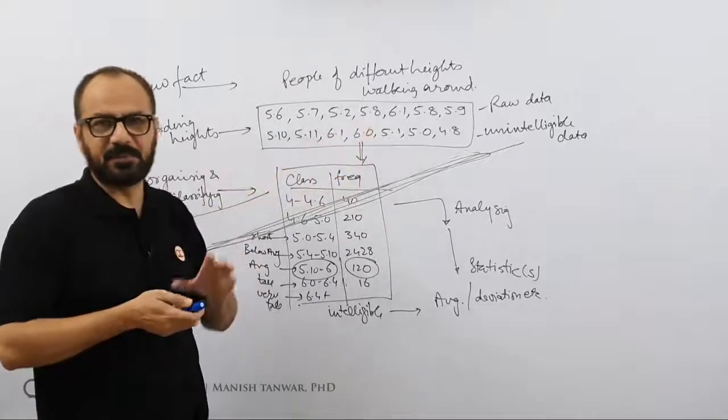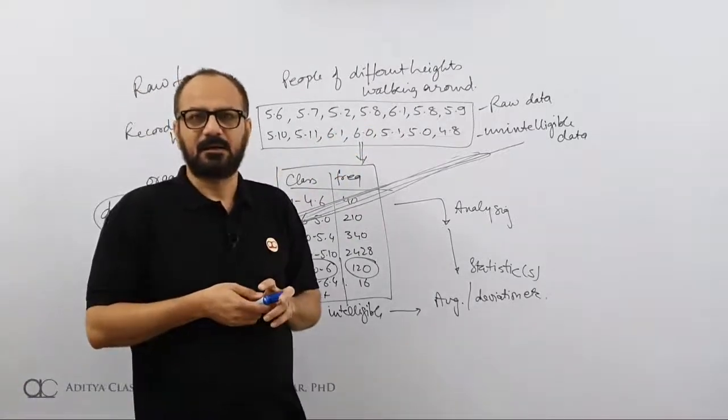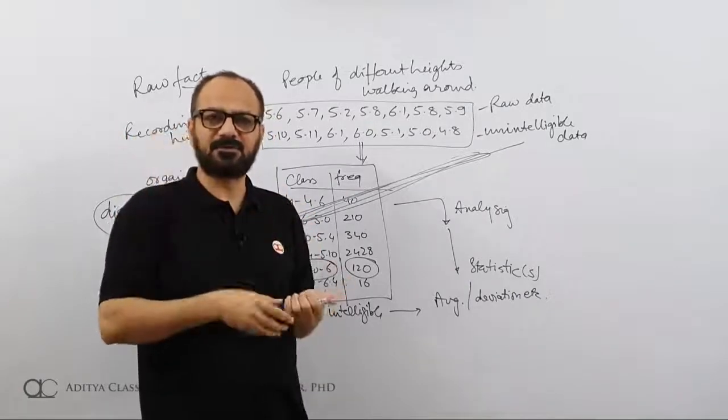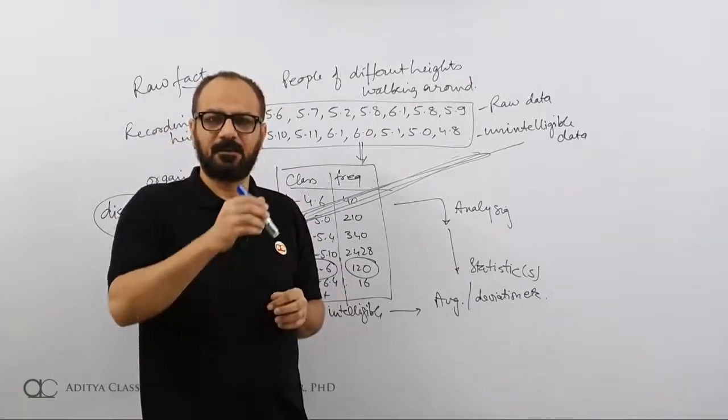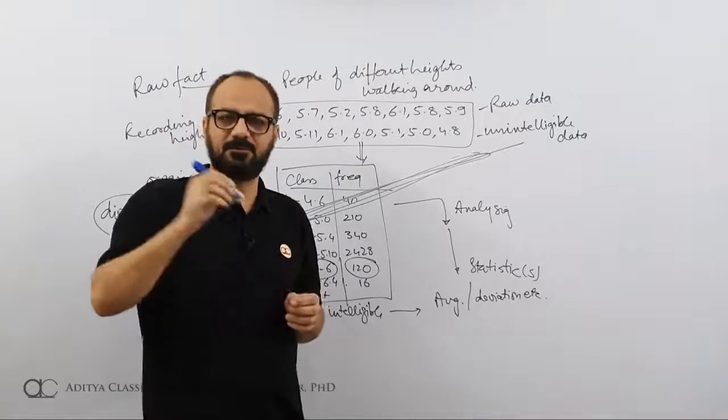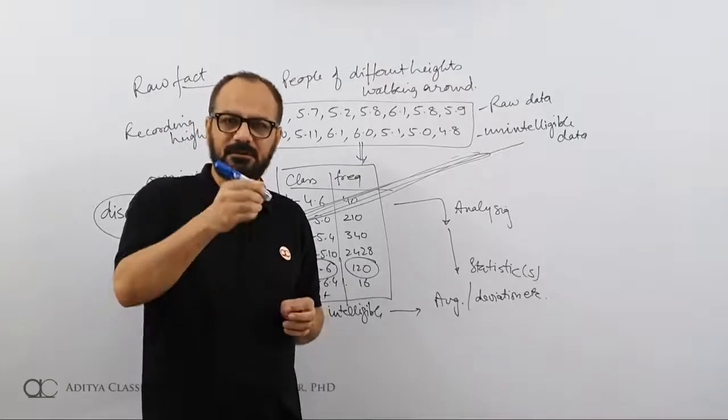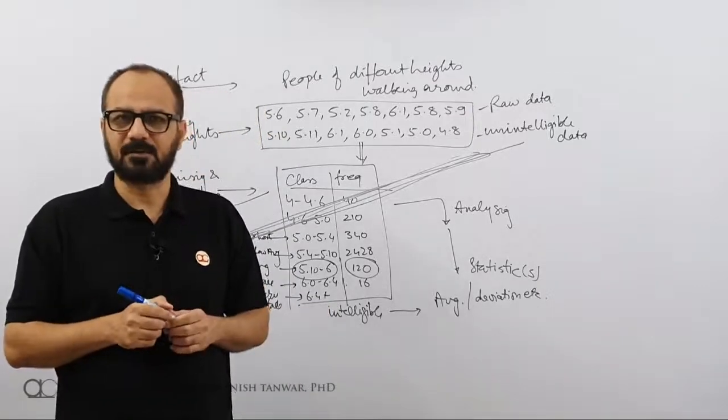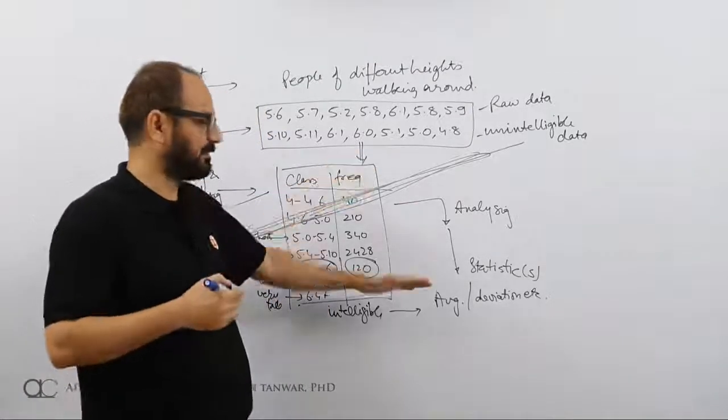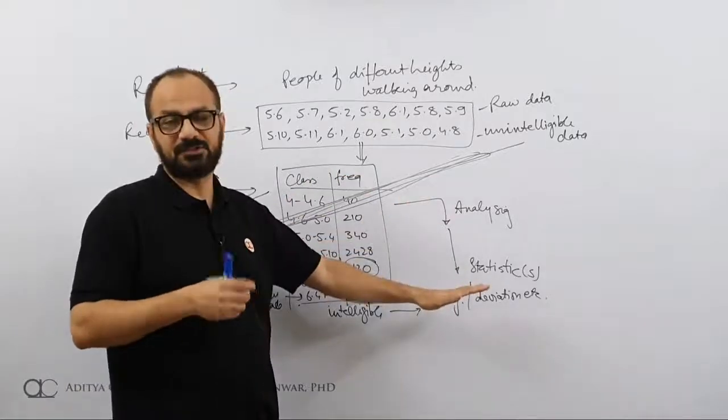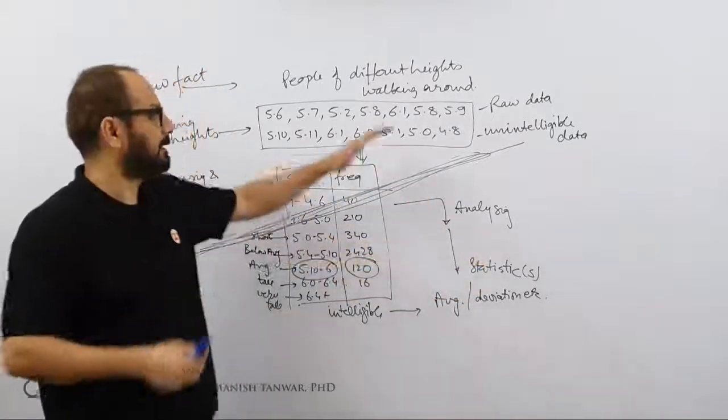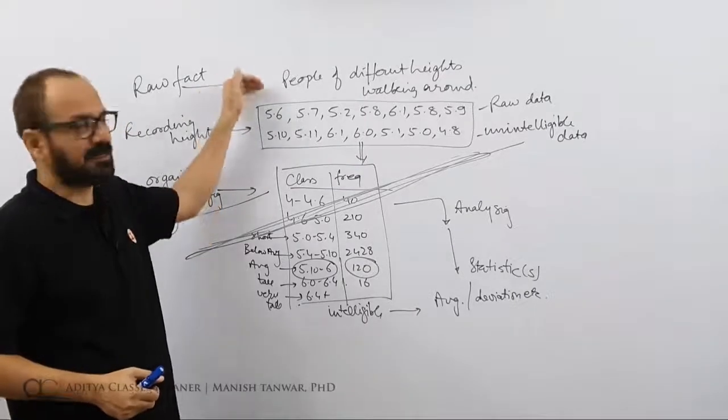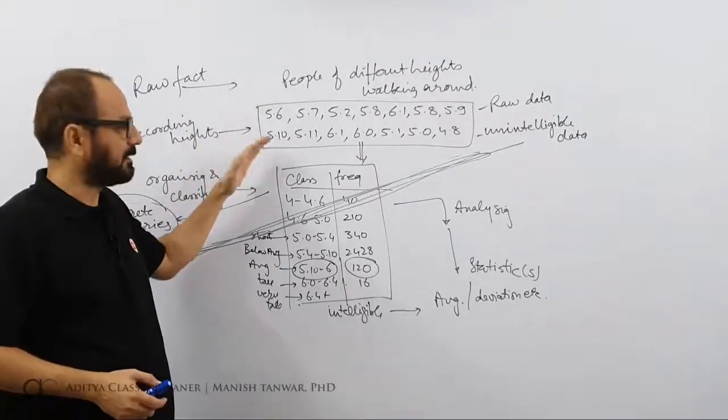Then what we see in newspapers - that of 20 toppers from Rajasthan, 6 came from Bikaner, 4 came from Jodhpur, 10 came from let's say Jaipur. So when you start getting this kind of data, that is manipulation, that is operation. Just reporting the facts - taking a test, giving you marks, measuring the height, reporting the heights - this is one section.